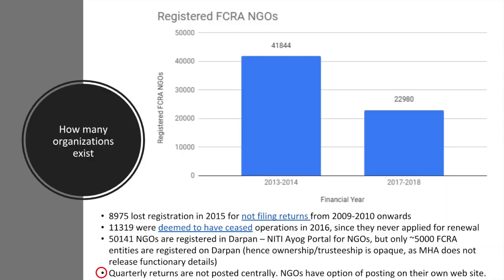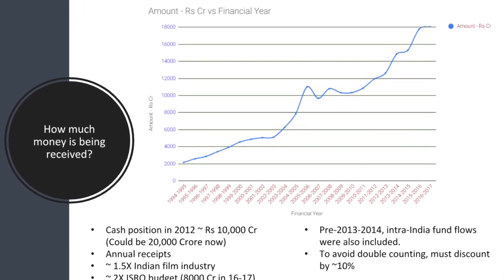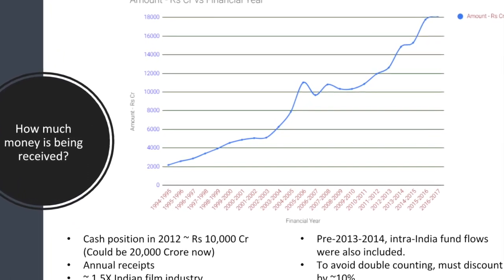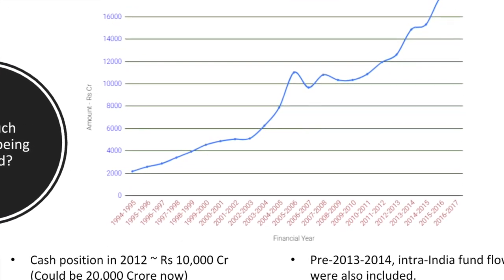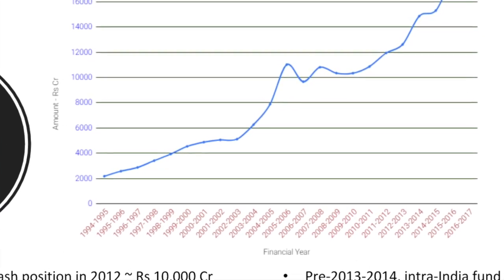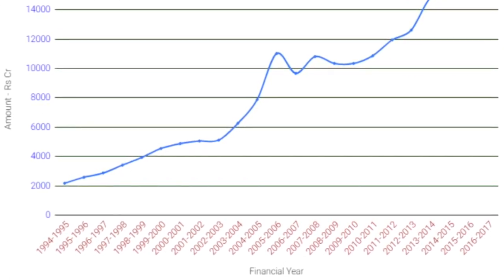NGOs are required to submit quarterly returns, but they can publish these on their own websites — they need not be published with the Ministry of Home Affairs. As for the financial scale, this is a quick graph of how much money these organizations have been receiving. The graph starts in 1994-95, when data first became available, with roughly around 2,000 crores per year. The amount has grown exponentially, and as of 2016-2017, the official figure released by the Government of India is 18,000 crores in that financial year alone.